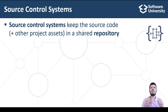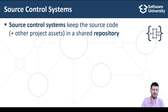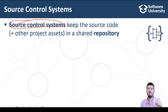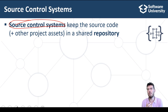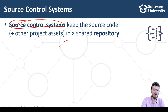Source control systems are critical for the software development process and coding in a team. Virtually all major companies and software development teams use source control systems — there are no exceptions. If you are a developer, you should know how to work with source control systems like Git and SVN.